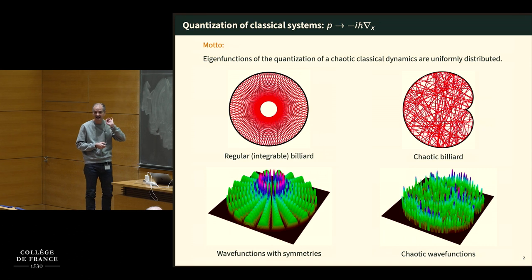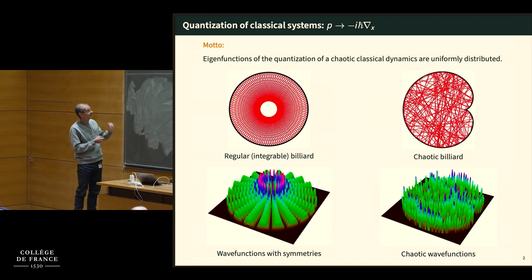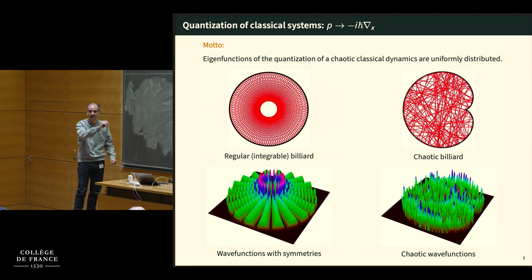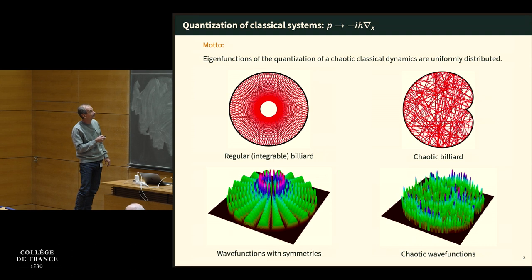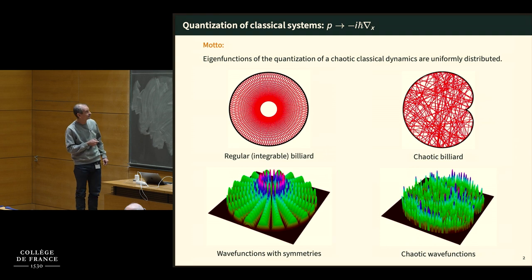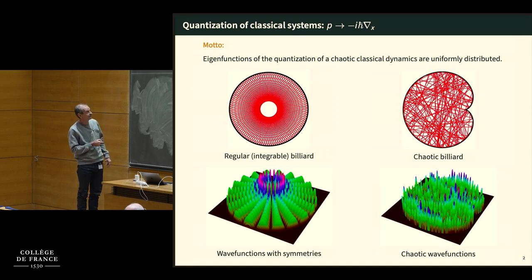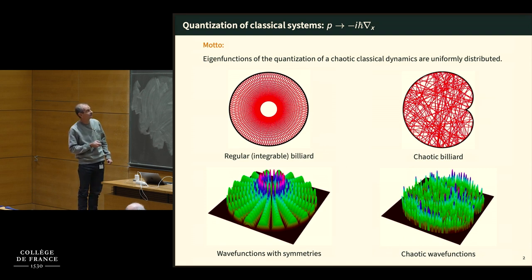On the top you see two very typical classical systems. One is the regular integrable billiard — the usual two-dimensional billiard table, a disk. The trajectories have nice regularity; in particular they have first integrals. One first integral is the angle of incidence that stays constant along the motion. On the other hand, if you change the billiard table to something less regular, like this cardioid, then immediately the trajectory becomes very, very chaotic.